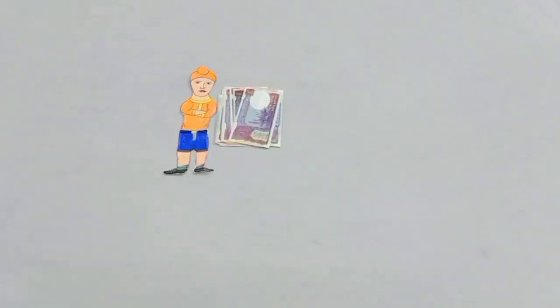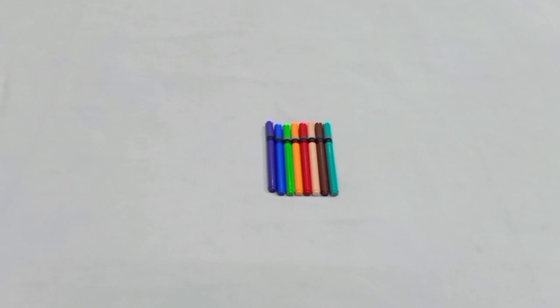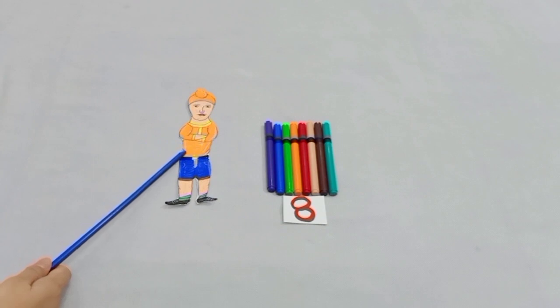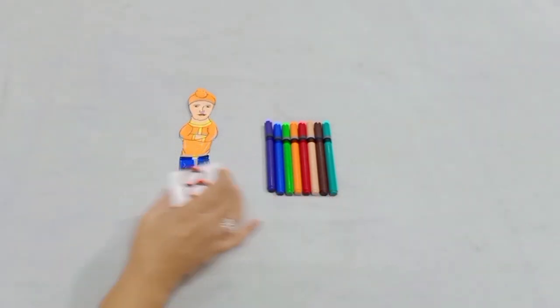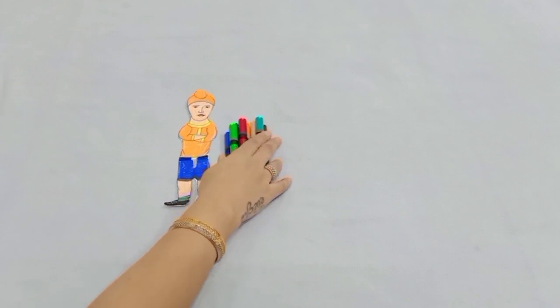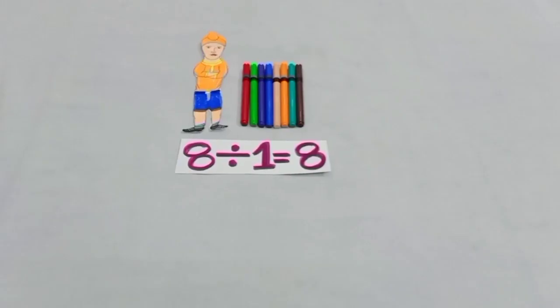Students, now I am having these 8 pence and I have to divide these 8 pence among children equally. But again, here is only a boy. So, he will get all the pence. So, we get when 8 is divided by 1, the answer is equal to 8.